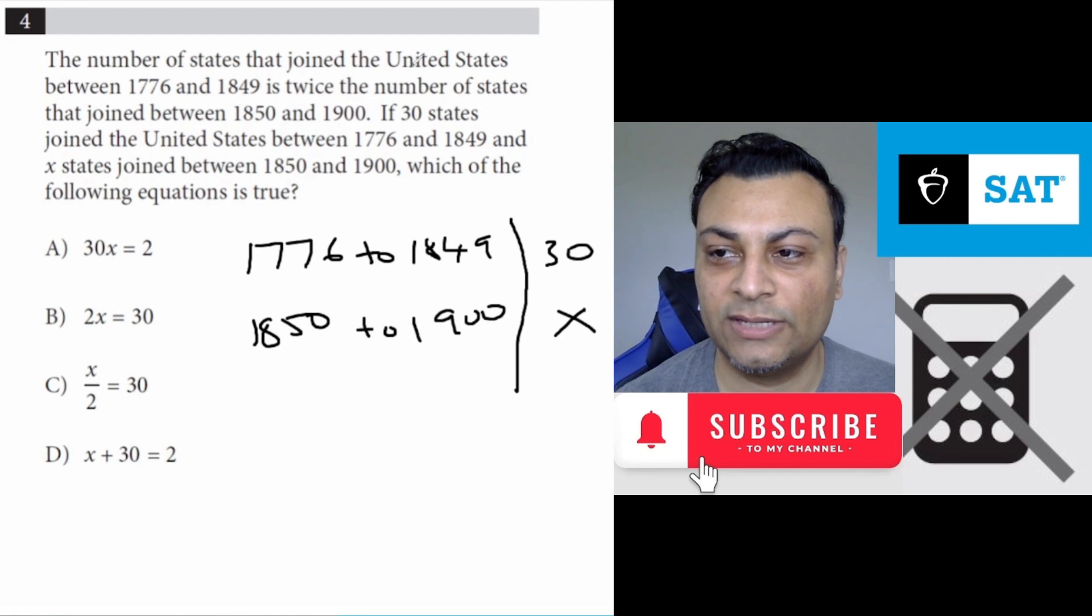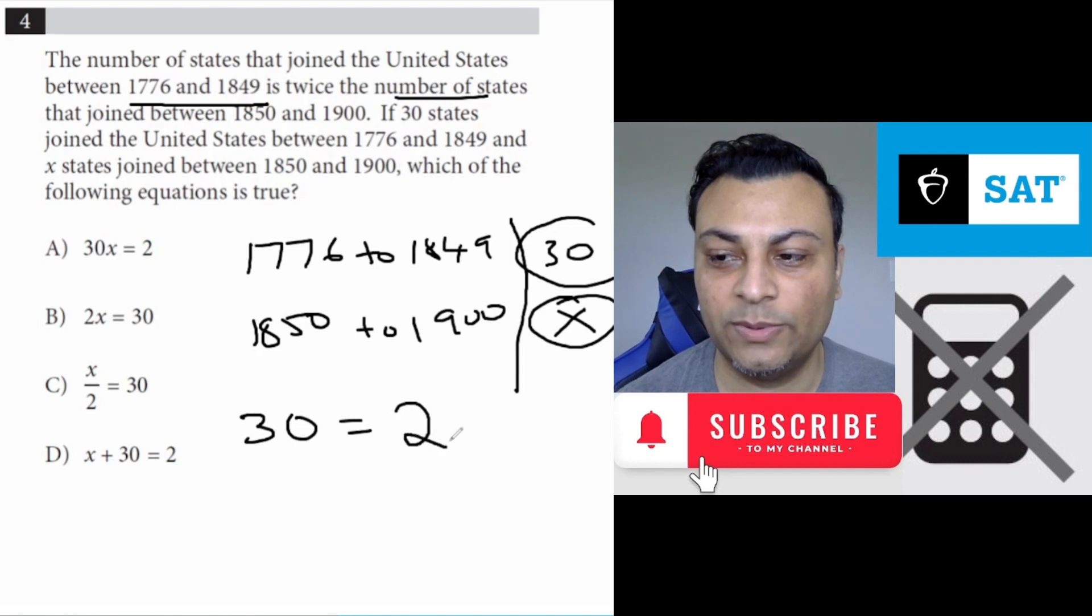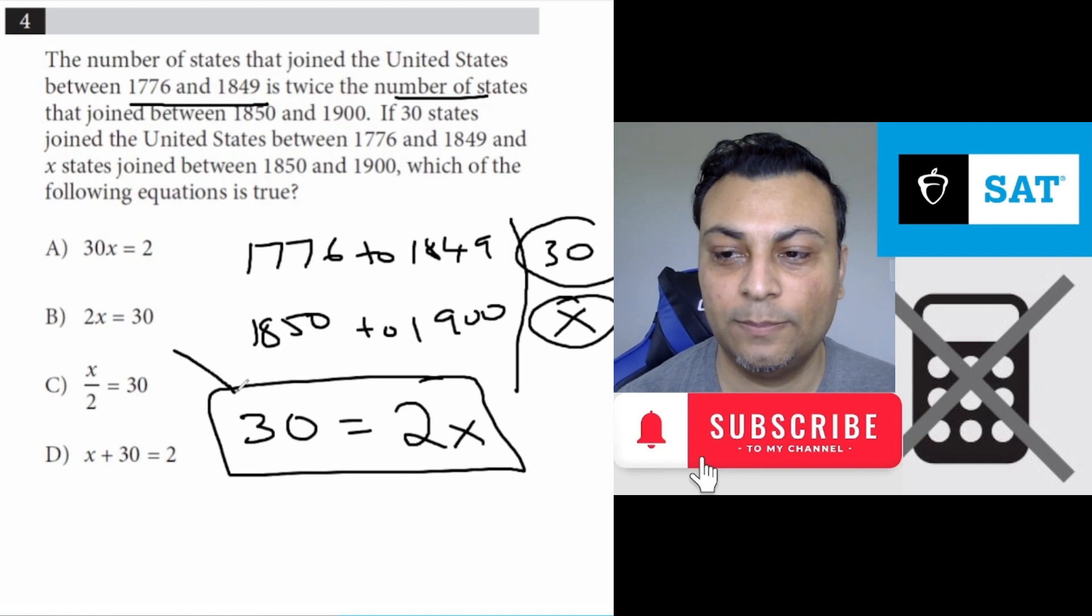And they're saying the number of states that joined between 1776 is twice the number, so this 30 is twice as big as X. So 30 is twice as big as X, two times the size of X, and that is option B.